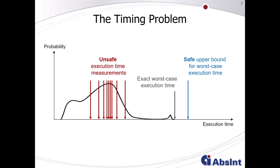The halting problem says there is no algorithm that can decide about another algorithm whether it terminates or not. So in general, there is no solution available that can compute the exact worst-case execution time for arbitrary general programs. But it should be possible to use abstraction and determine a safe upper bound for this worst-case execution time.